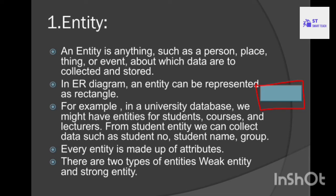For example, in a university database we might have entities for students, courses, and lecturers. Student is an entity because students have some properties: student ID, student name, student group, student age. Course is an entity with properties like course ID and course name. Lecturers also have properties: lecturer ID, lecturer name, and lecturer subject. These are all called entities.